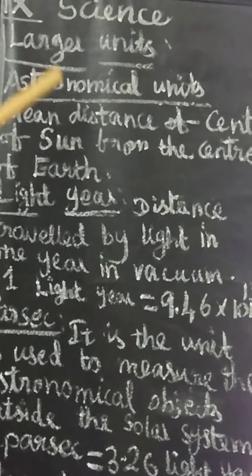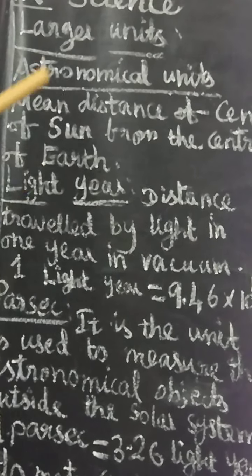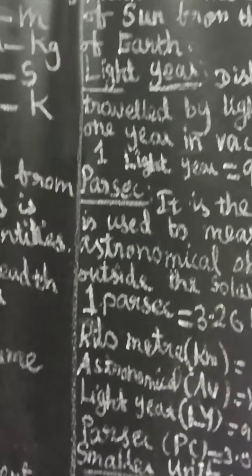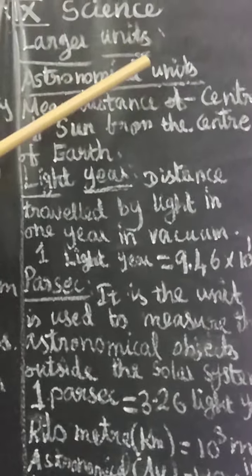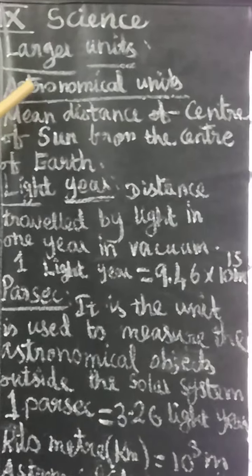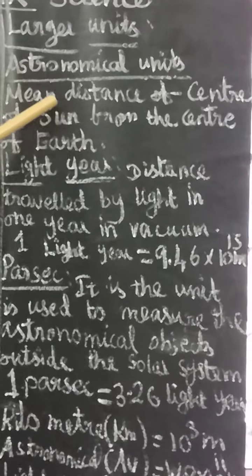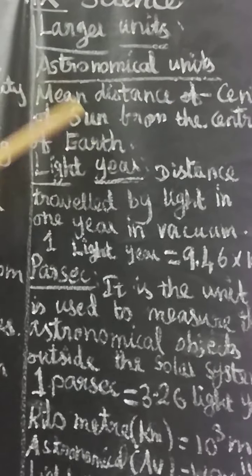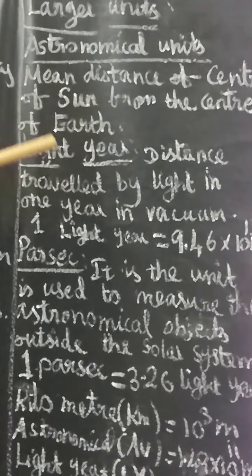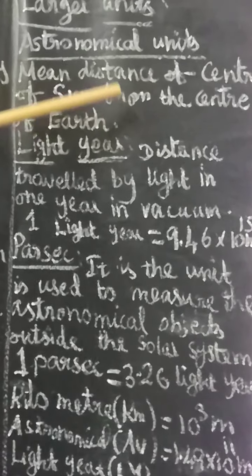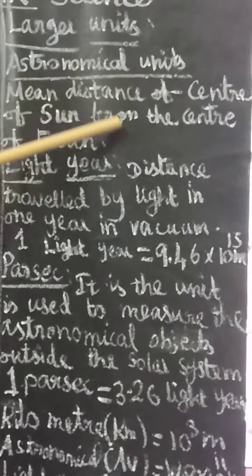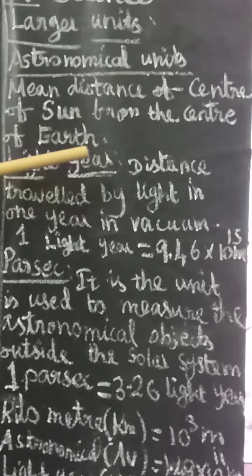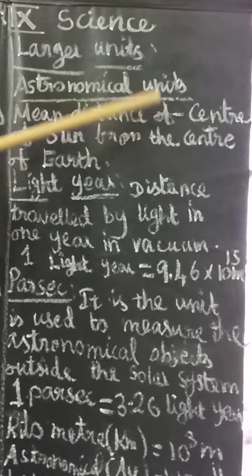What are the larger units? First: astronomical unit. Second: light year. Third: parsec. The astronomical unit is the mean distance from the center of the sun to the center of the earth. You measure that distance using the astronomical unit.